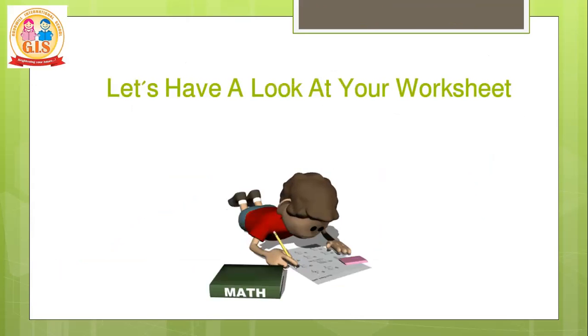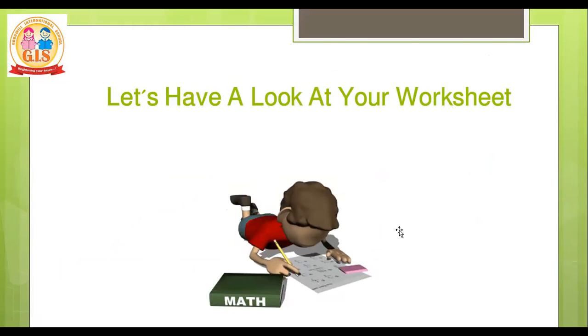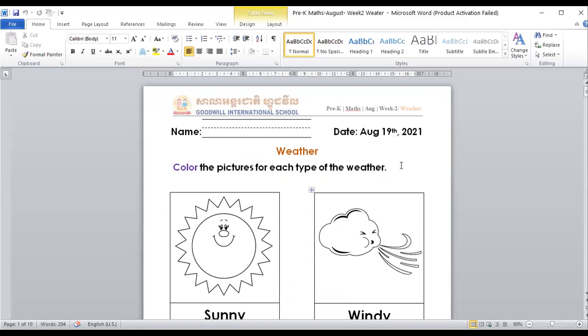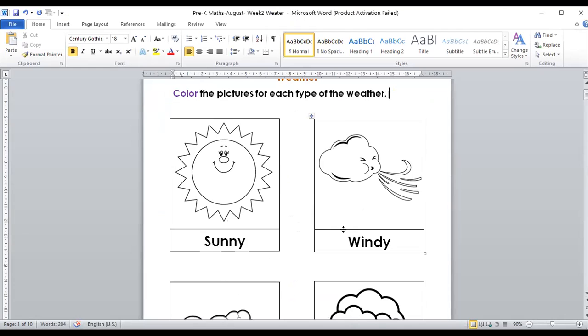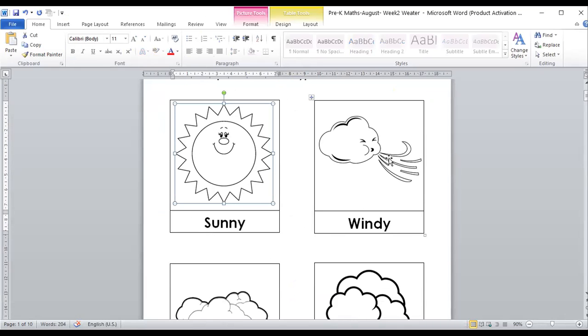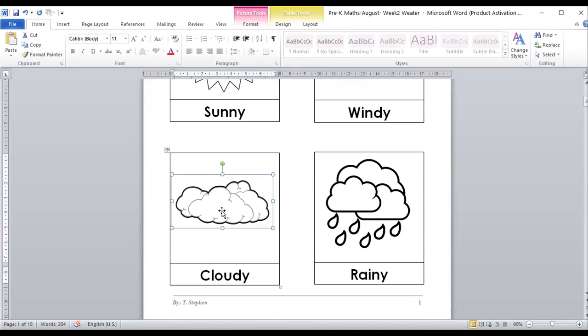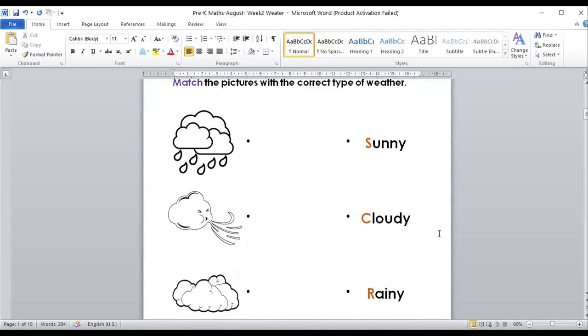You can check your worksheet. Let me show you. Here, your worksheet comes from here. First, you have to color. You have to color this one. Color all the weather here, like sunny, windy, cloudies, and rainy.